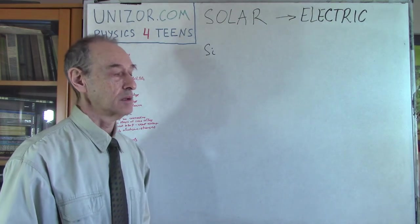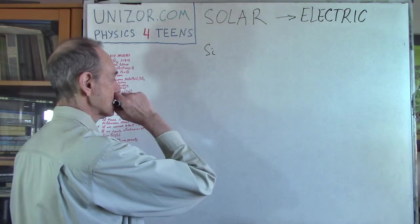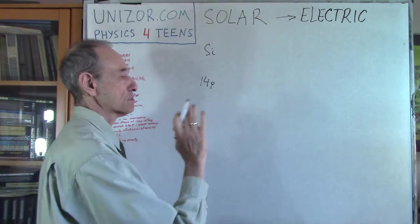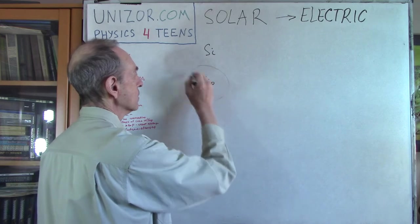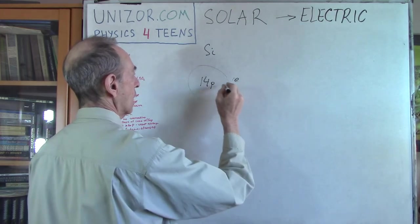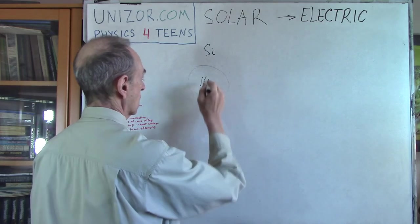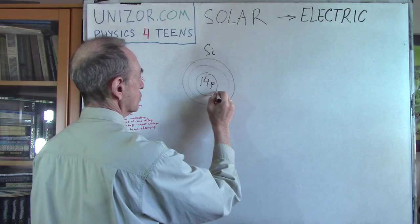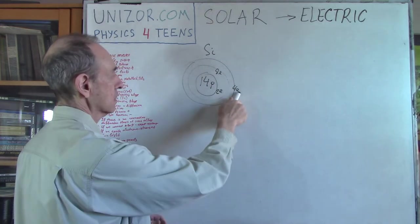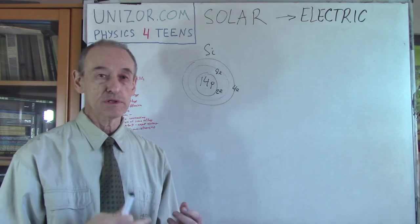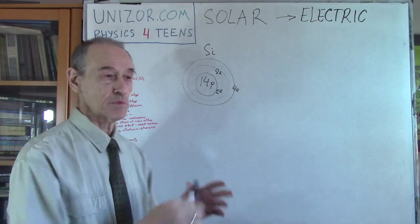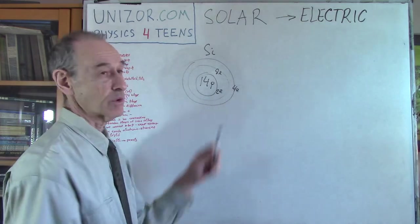The structure of the silicon atom: it has 14 protons and 14 electrons. Those 14 electrons are not on the same orbit — they are on three orbits. Two electrons on the first, eight on the second, and four on the outermost orbit. The outermost orbit is where valence electrons are located — those which are related to chemical and other bonds with other atoms — and it has only four.